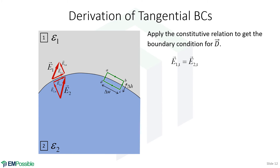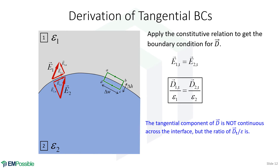What about the tangential components of the electric flux? Starting with the boundary condition for E, we apply the constitutive relation: E1 tangential equals D1 tangential divided by epsilon one, and E2 tangential equals D2 tangential divided by epsilon two. So the tangential component of the electric flux is not continuous across the interface; however, the ratio of the tangential electric flux divided by permittivity is continuous across the interface.